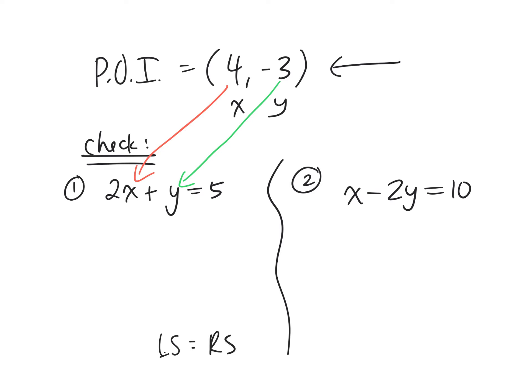You're trying to see if the left side balances the right side. If the two sides don't balance, then this point is not on that line. It doesn't make sense. So check right now to see if that is the correct answer. So 2 times 4 plus negative 3 equals 5. And then you're going to do 4 take away 2 times negative 3 equals 10.